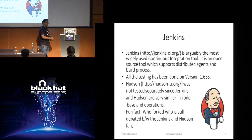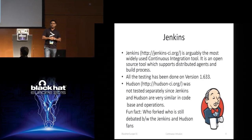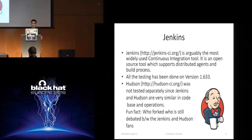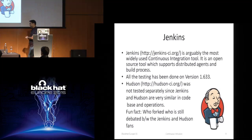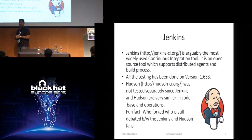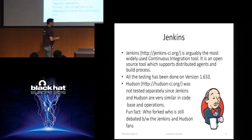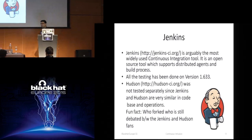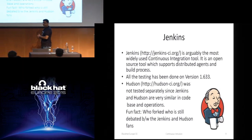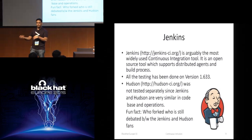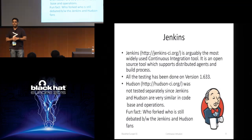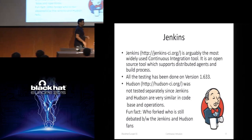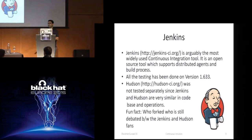Starting with Jenkins — it is, obviously, if you are even new to the CI thing, you must have heard about Jenkins. It is the most widely used CI tool. All testing has been done on version 1.633, which was the latest when I started finalizing demonstrations for this talk. Hudson was not tested separately — Hudson and Jenkins are sort of twins. In the CI fan clubs, it's still debatable who forked who. You can safely assume that whatever applies to Jenkins applies to Hudson as well.